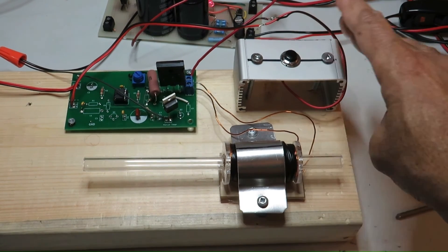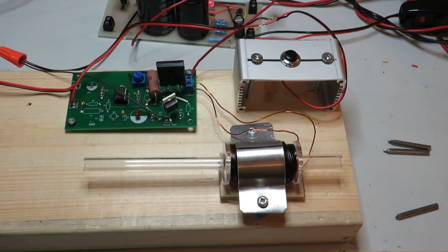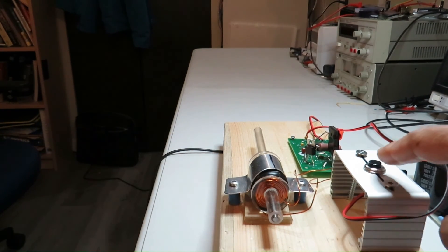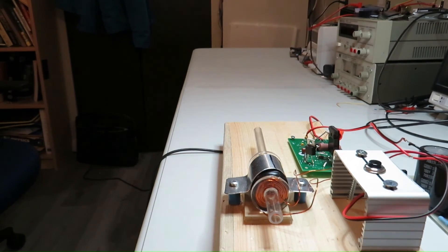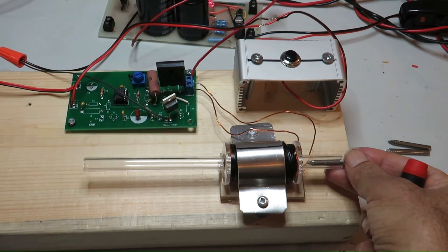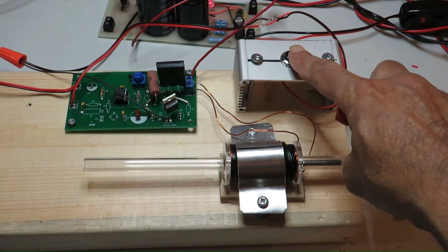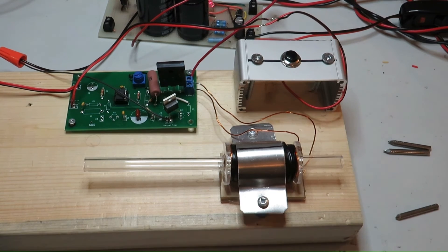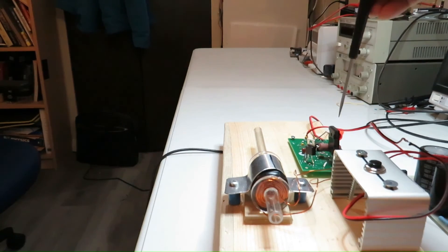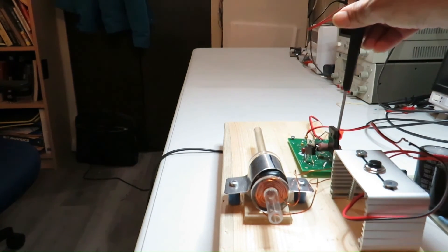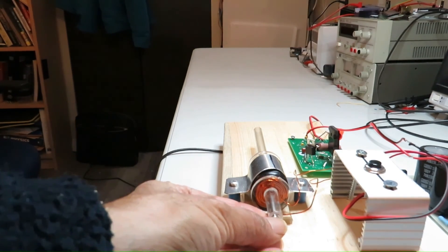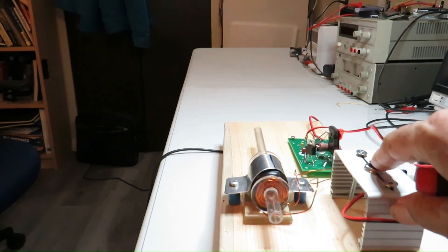Now this is the first test with 1.5 millisecond. So you can see the speed is not much. Now the pulse width is increased to 2.5 millisecond. So with 2.5 millisecond, you will see the speed now. So it is getting better.